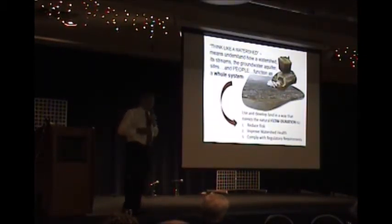When we say think like a watershed, which is the theme for this symposium, it's understand how a watershed, the streams, the groundwater, aquifer, sites, and people, function as a whole system. Tim, in your presentation last night, I thought it was great that you, the imagery that you used, because so often technical people really screw things up in terms of making things seem so complicated. Your presentation of just explaining the basics of the images, what more do we need to convey and understand? In terms of the whole system's approach, use and develop land in a way that mimics the natural, and here's the key words I want you to go away with, flow duration. Think of the flow pattern in the creek. That's what we're trying to replicate. Because if you do that, you reduce risk, and that risk is environmental, it's financial. You improve health, you comply with regulatory requirements.